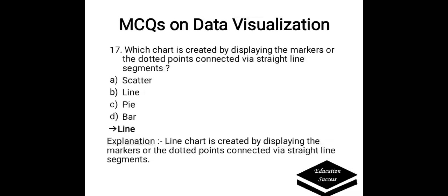Which chart is created by displaying the markers or the dotted points connected via straight line segments? Options are: A. Scatter, B. Line, C. Pie, D. Bar. Correct answer is Line. A line chart is created by displaying the markers or the dotted points connected via straight line segments.